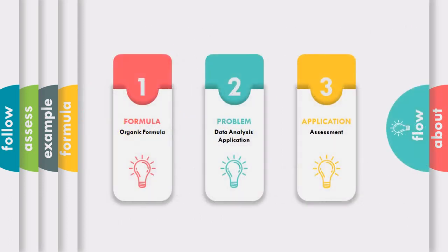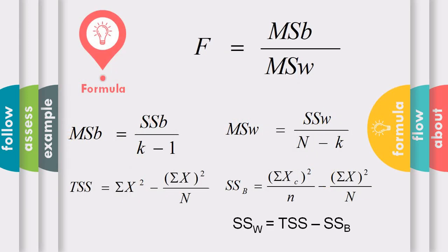The organic formula here is: F-test equals MSB over MSW — that is, mean square between divided by mean square within. To find the MSB, you take the sum of squares between, all over k minus 1, where k is the number of categories. For example, if you have three modalities of instruction, then k equals 3, so the denominator is 3 minus 1.